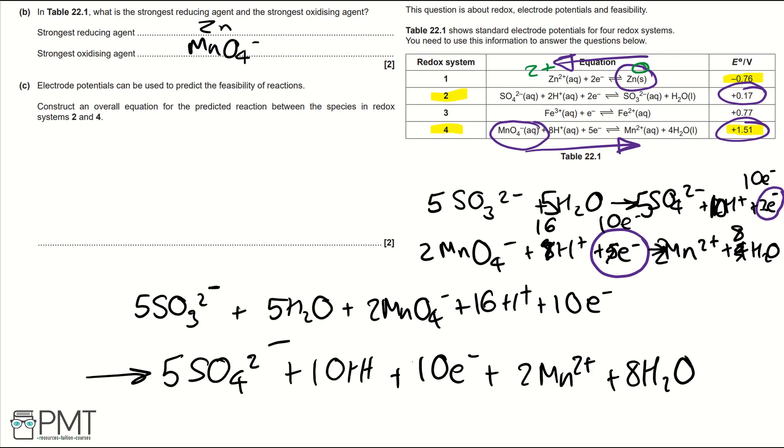Now we need to cancel some of our reactants and products. So this 10H+ and 16H+ would cancel out and make 6H+ for our reactants and then none in our products. The electrons would cancel out and some of the waters would cancel out. So we've got these 5 and this 8 and this 8 would turn into 3.